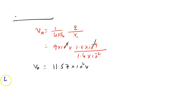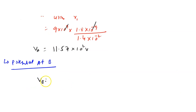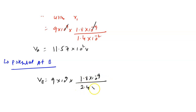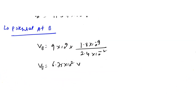Similarly, for potential at B, using the same formula: VB equals 9 × 10⁹ × 1.8 × 10⁻⁹ divided by 2.4 × 10⁻² meter. We get VB equals 6.75 × 10² volt.